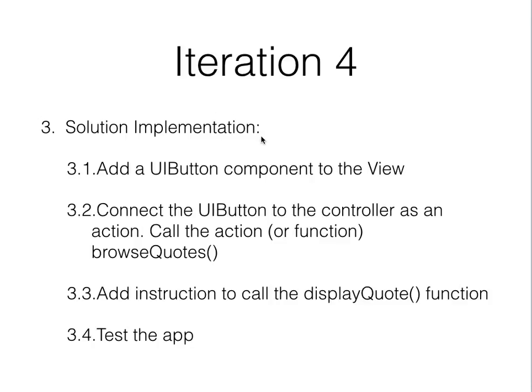That's the controller. For the implementation steps: add a button component, adjust the layout in the view, connect it to the controller with a new custom function called browseCodes, then add the instruction to call the displayCode function. If you named your function differently, adjust accordingly — just be consistent with your naming convention. Then test the app. It's very simple. Even though browsing everything sounds heavy at first, it comes down to a single instruction calling something we already did.